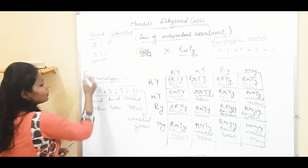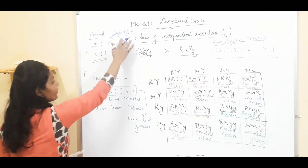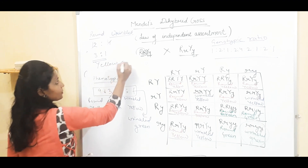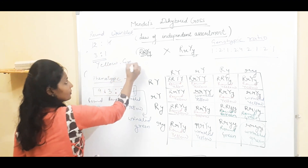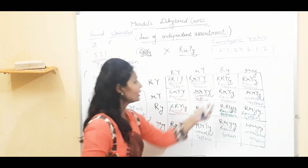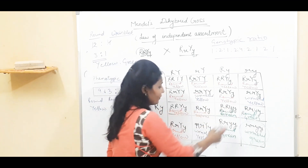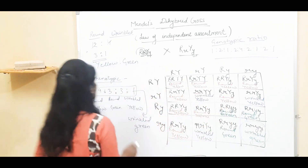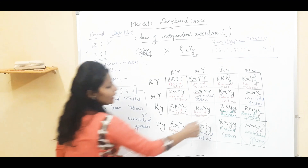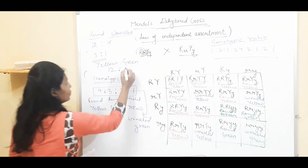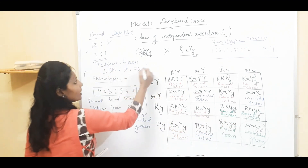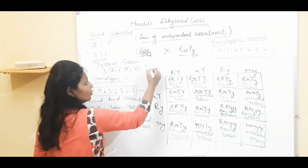Similarly, if we take only the yellow and green character, counting from the Punnett square: we have 12 yellow seeds and 4 green seeds. Again the ratio is 12:4, which simplifies to 3:1. So each individual character in the dihybrid cross independently gives the 3:1 ratio seen in monohybrid crosses — confirming the law of independent assortment.